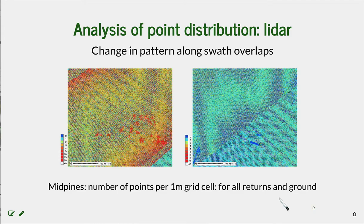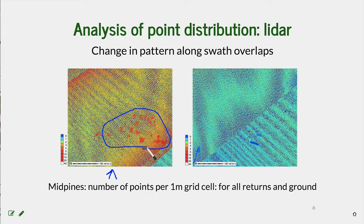Here is a closer look zoomed into point densities at our Mid Pines area where we have the LiDAR point cloud. We are comparing the number of points per one meter grid cell from all returns. You can see the overlap, but also higher point densities in the area where we have trees. This image shows the point cloud densities for bare ground, and you can identify that even after processing and extracting the bare ground points, you still have an edge difference between point clouds acquired from different swaths.